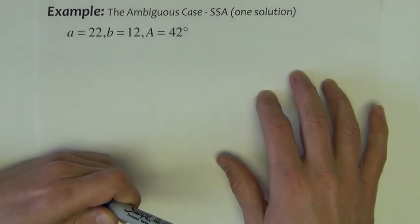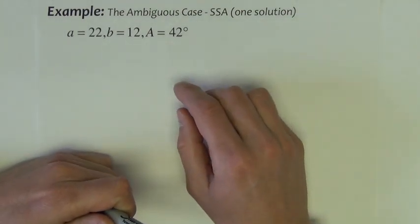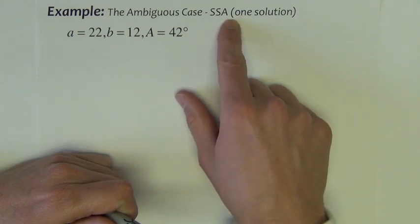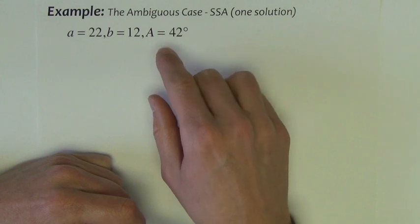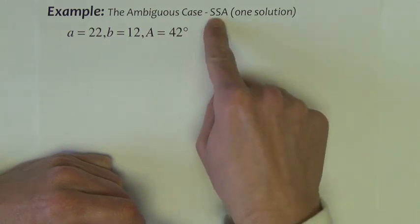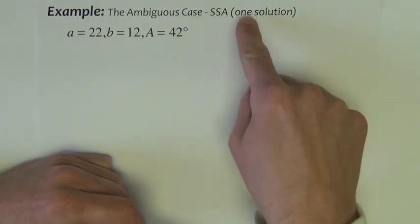Next we're going to look at three problems where you're given a side-side-angle, and call it the ambiguous case because there are situations where sometimes this setup has one solution, sometimes it has no solution, sometimes it has two solutions.